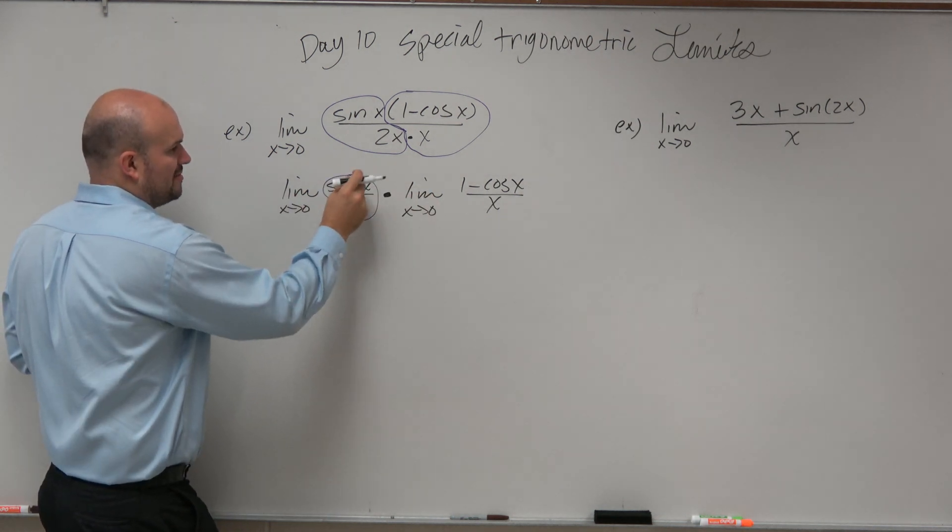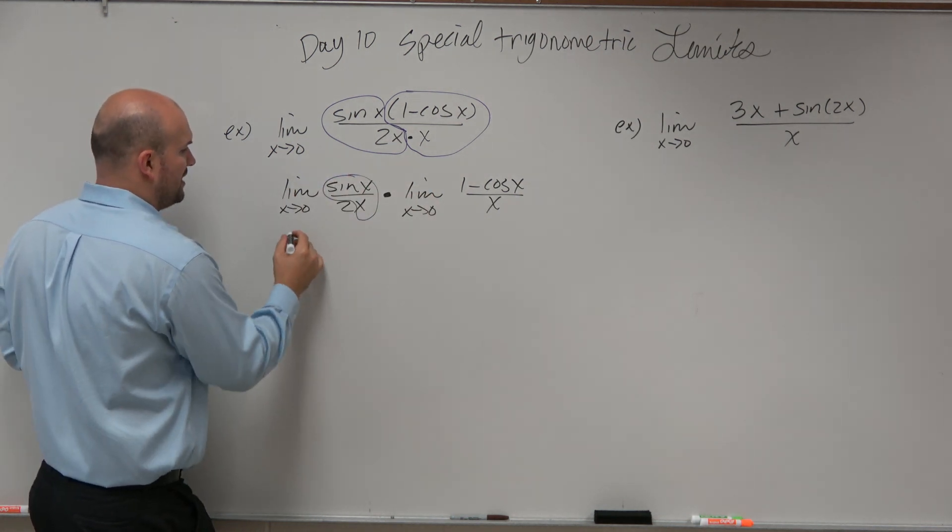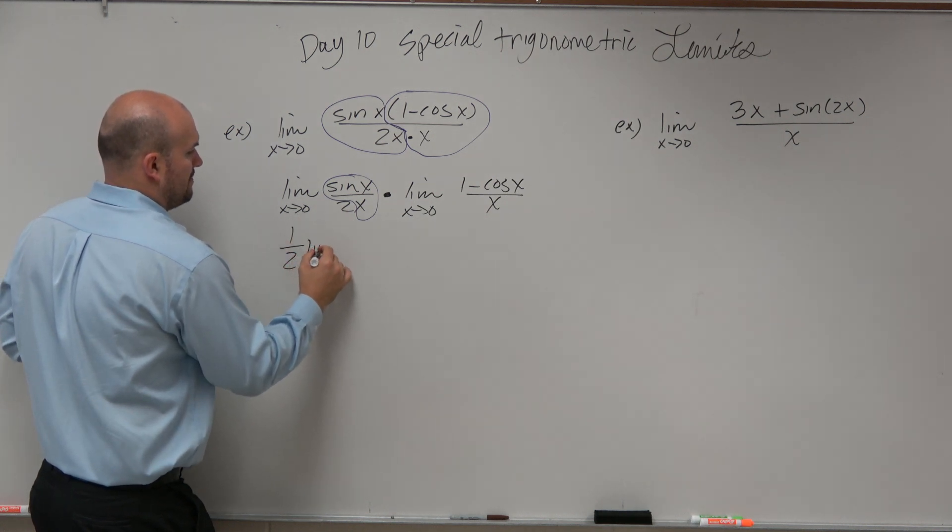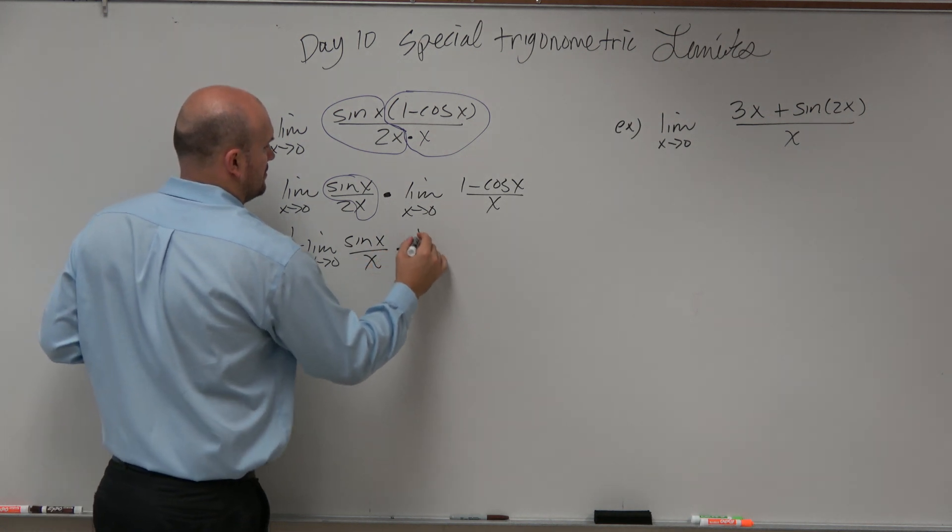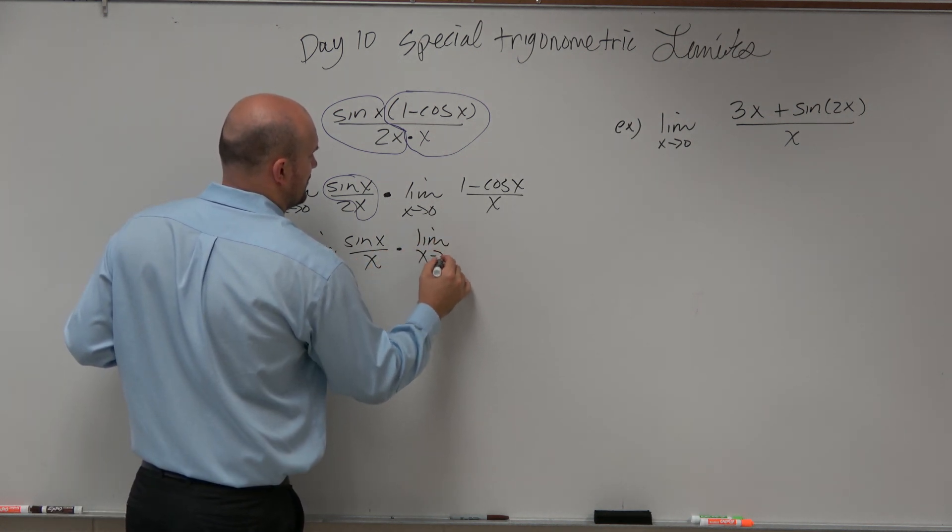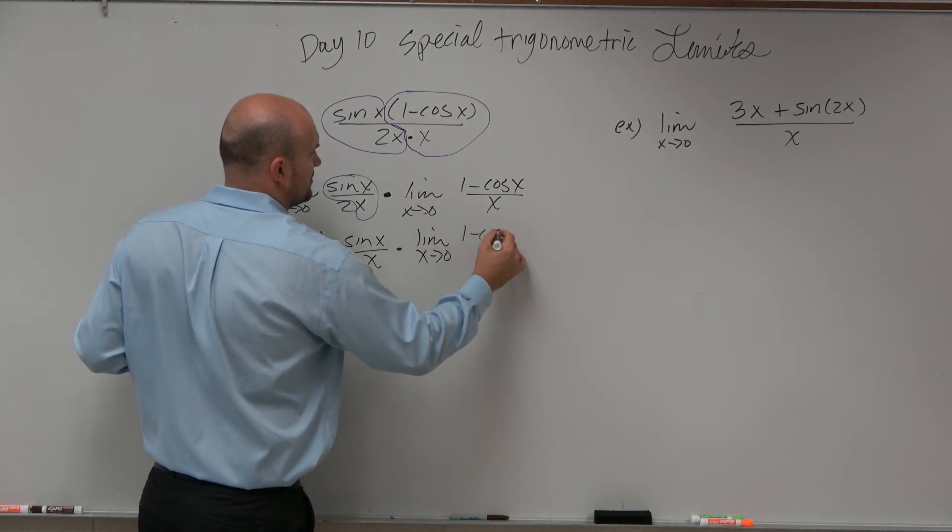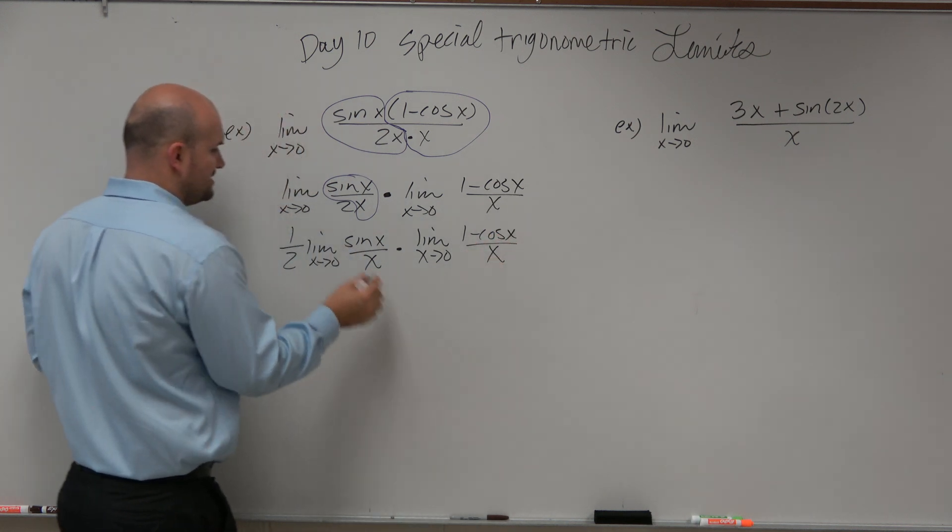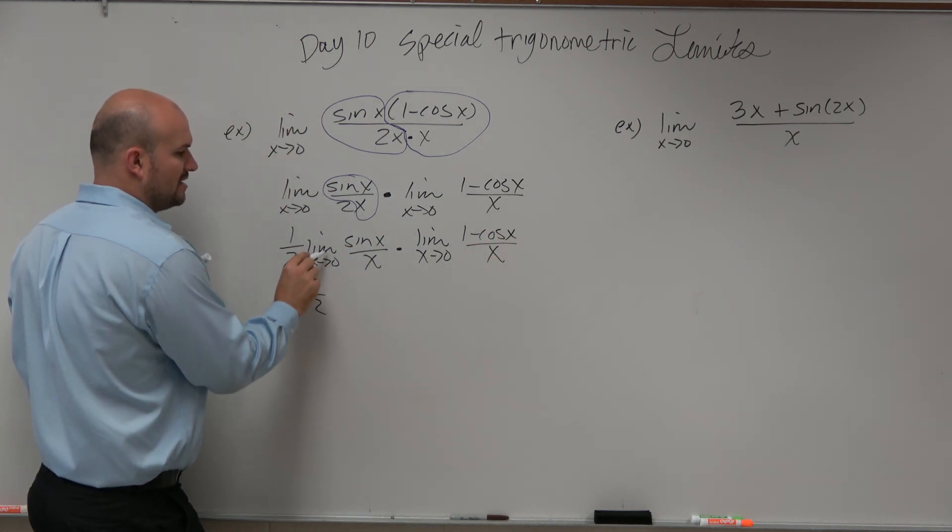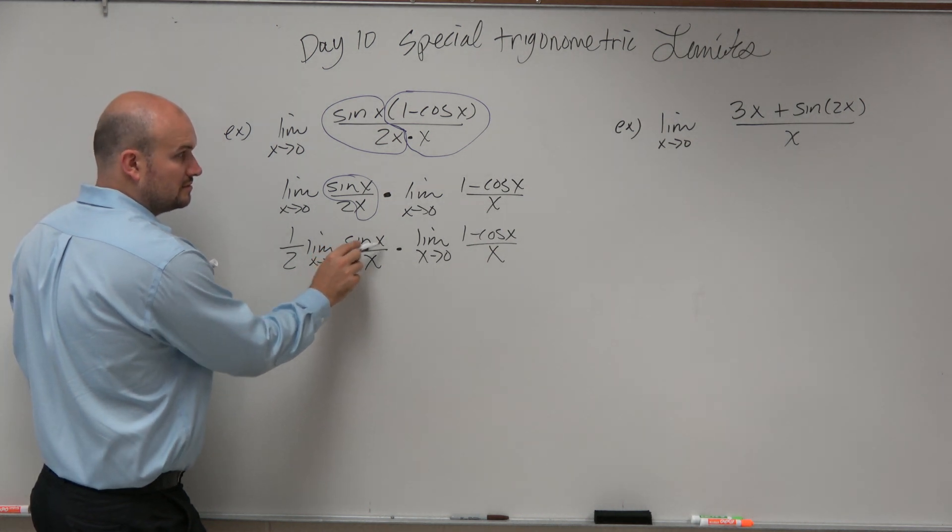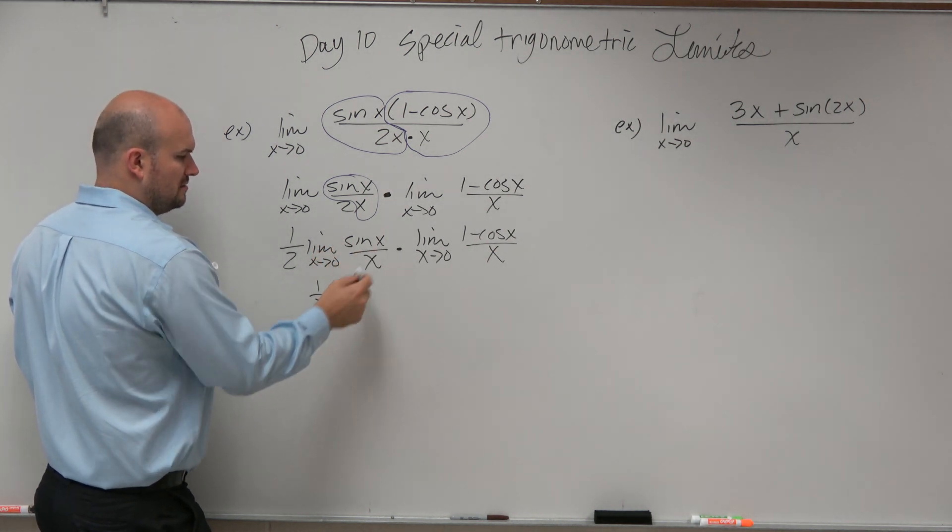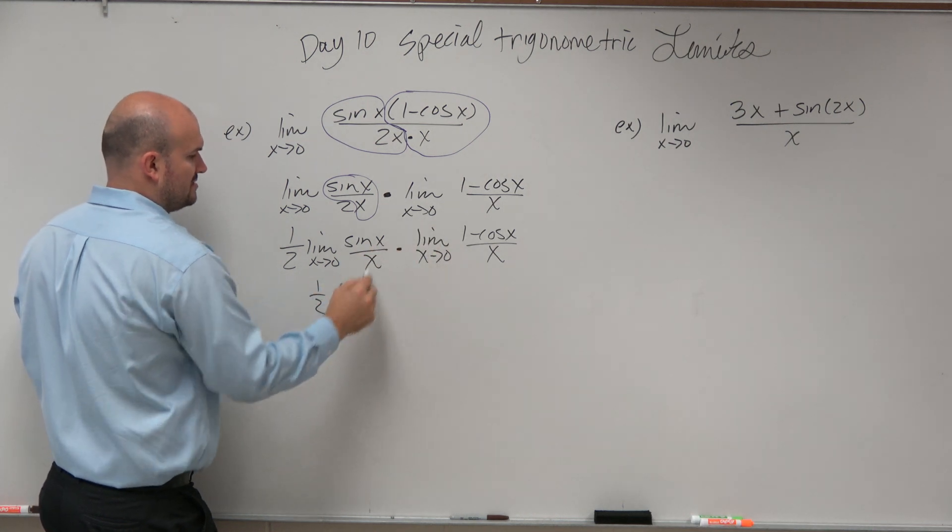Then, even though you don't really need to do much work after this because that's going to go to 0, just to practice a little bit more, we could take out the 1 half. I'm just going a little overboard just because I know it's still new. But guys, we have 1 half. What's the limit as x approaches 0 of sine of x over x? What is this? 1. What is this? 0.